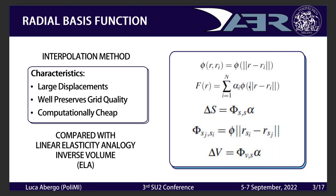In RBF, being an interpolation technique, we impose the exact displacement at some control points and then compute the displacement field. First for the surface: the value is related to the distance from each surface node to the control points. When we want the exact value, we compute the weights by solving the first linear system, and then we propagate the deformation into the volume by solving a second linear system.